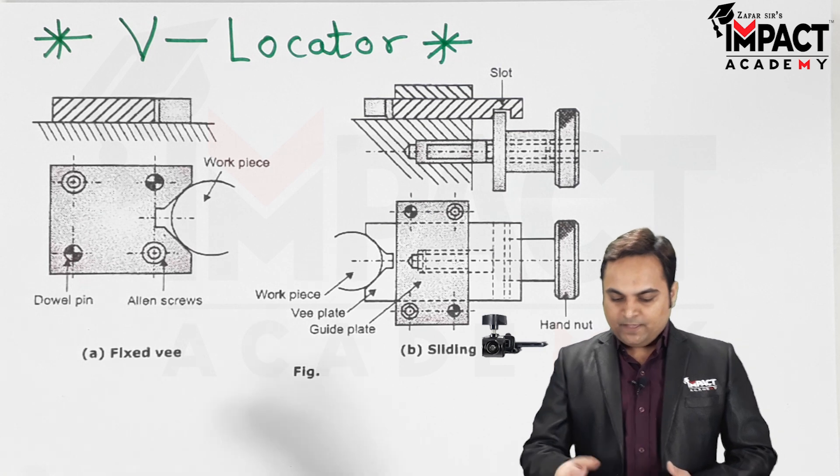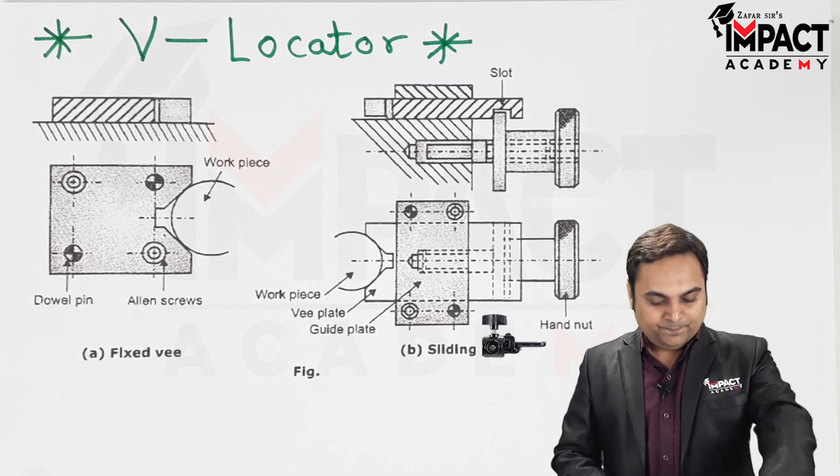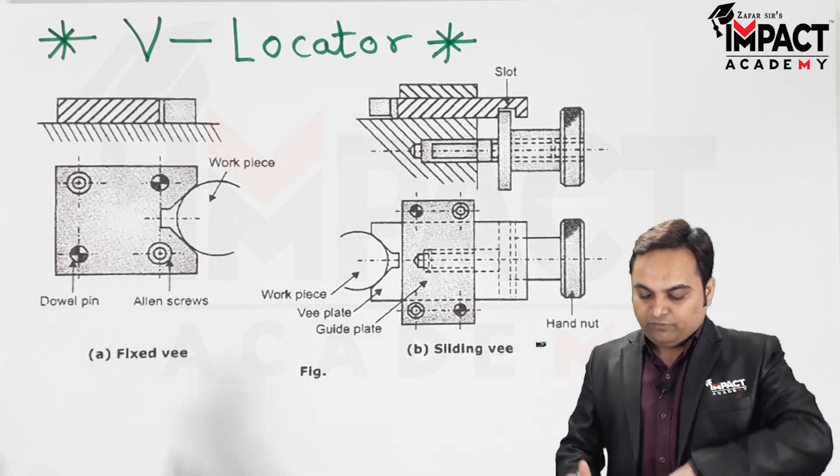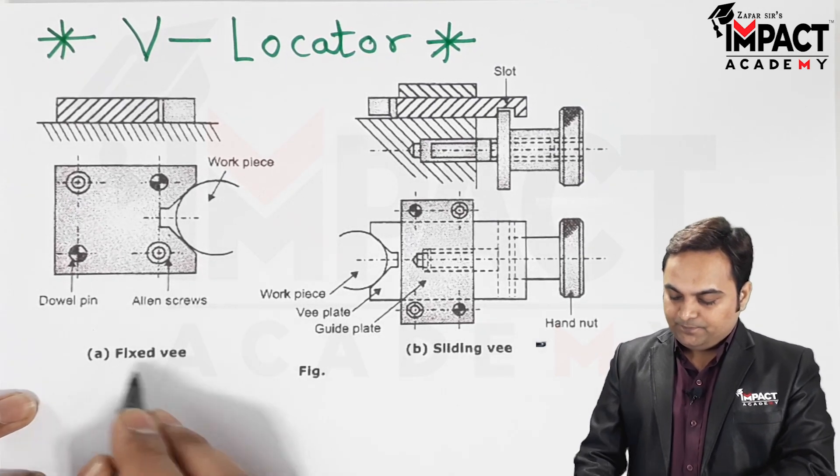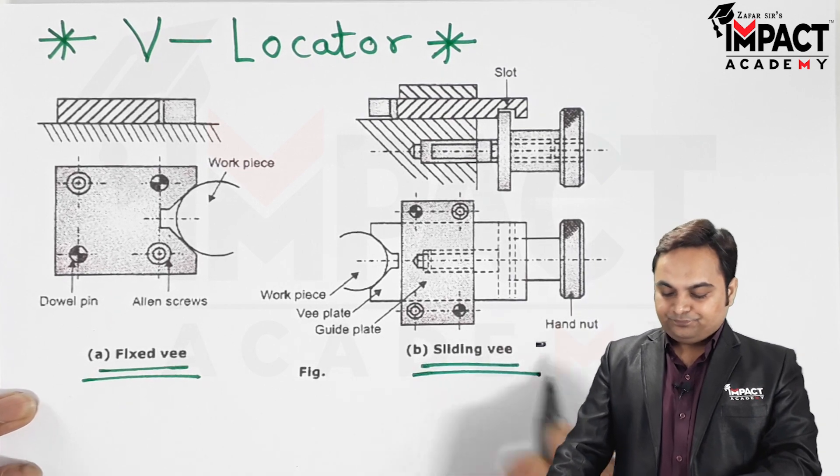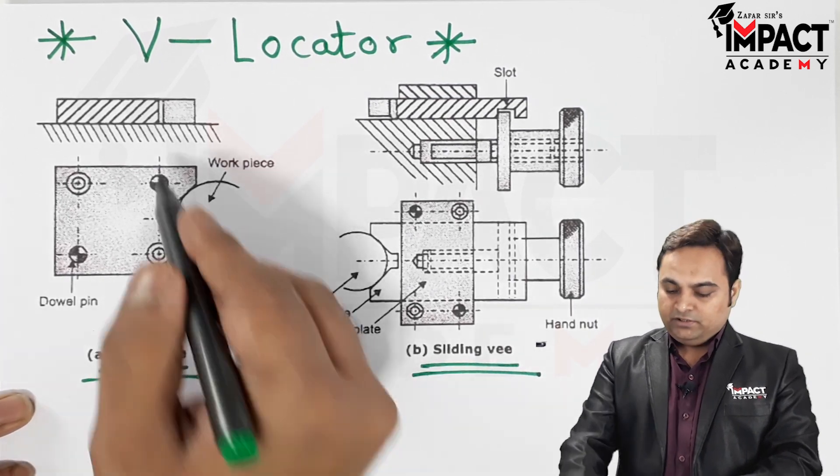As shown in the diagram here, the first diagram shows the V-locator of fixed type, that is fixed V, and the second diagram shows the sliding V. Now in case of fixed V, this V-locator is fixed in the body of the jig or fixture.